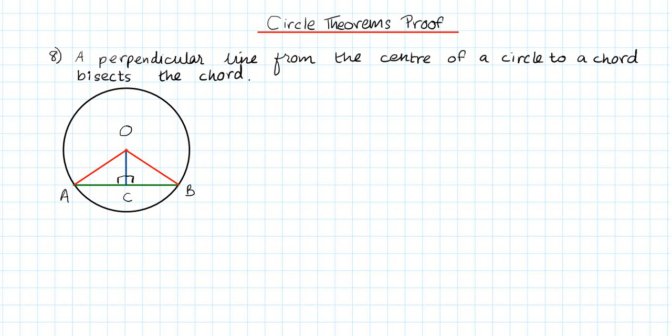Assalamu alaikum everyone. This video is another video on circle theorem proofs, to prove the circle theorem that a perpendicular line from the center of a circle to a chord bisects the chord. In order to prove this, we're going to use this diagram here. We've got a circle with center O, OA is a radius and OB is another radius.